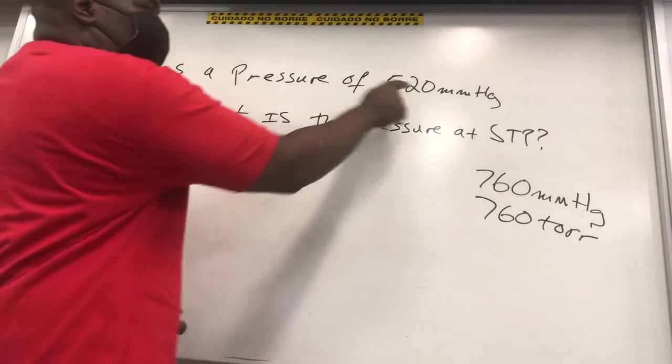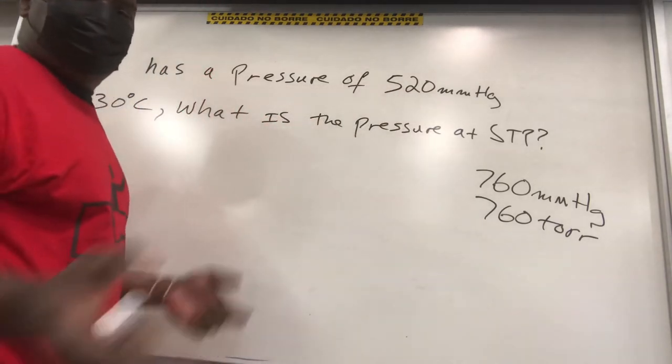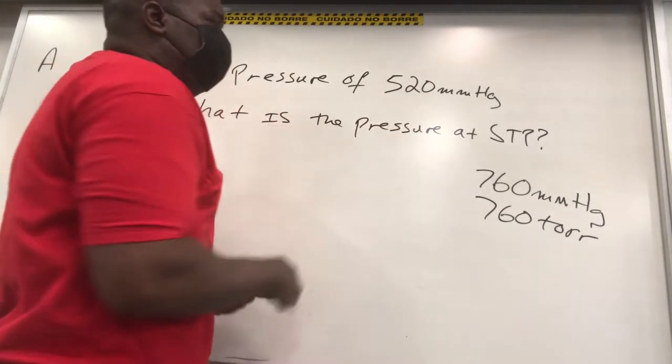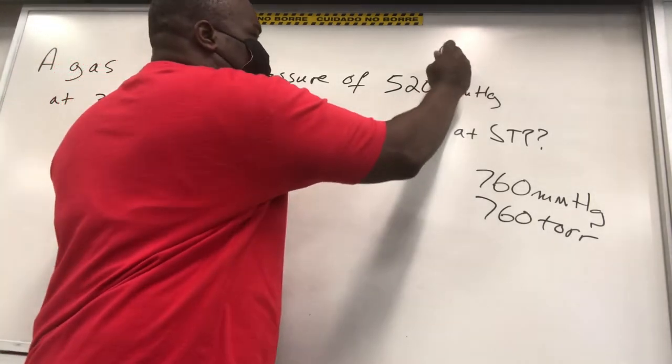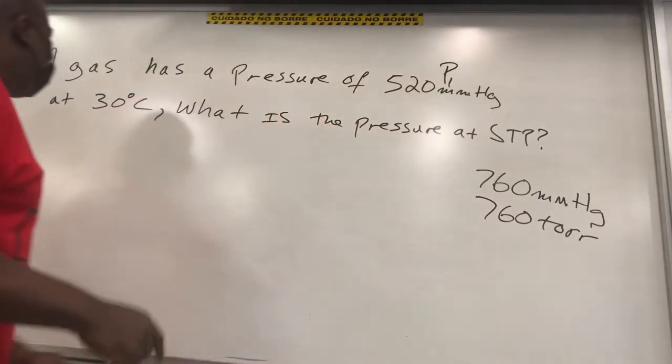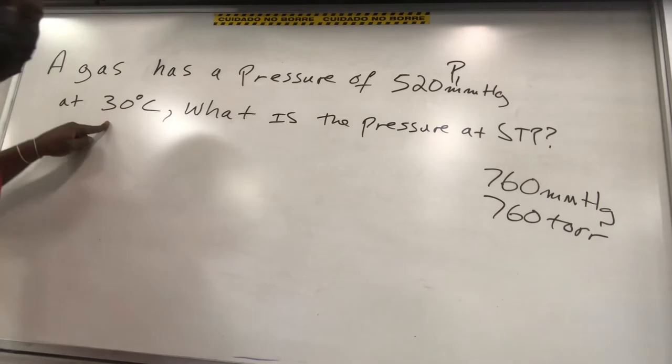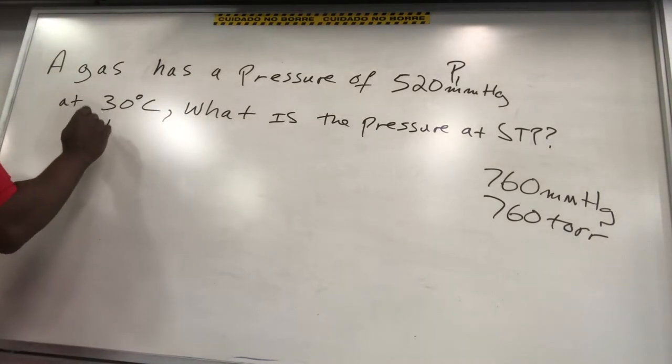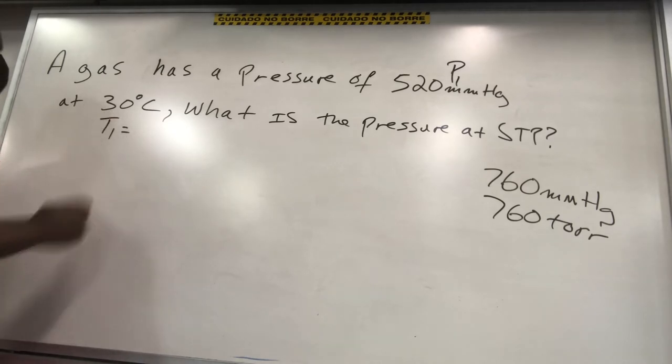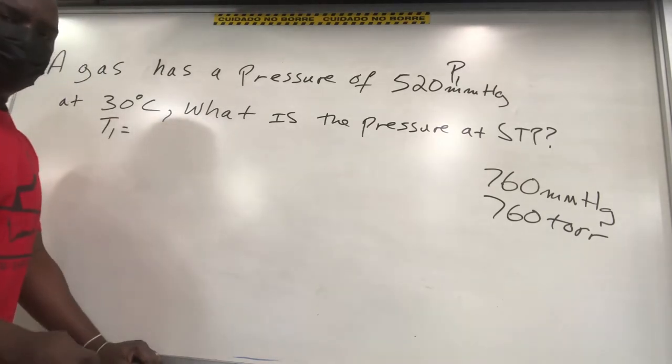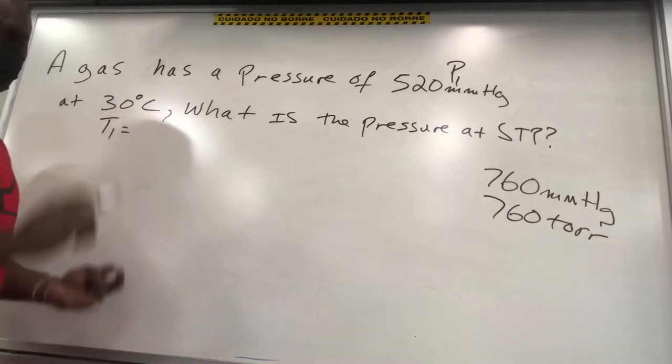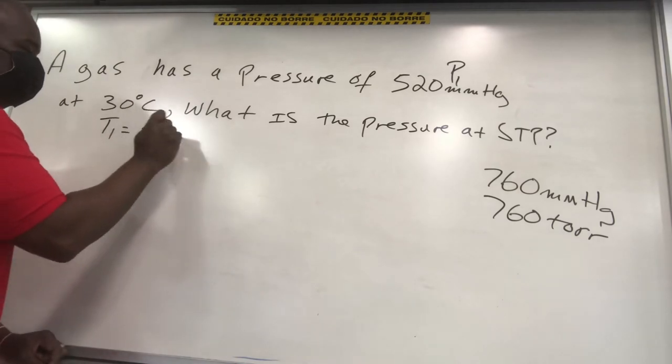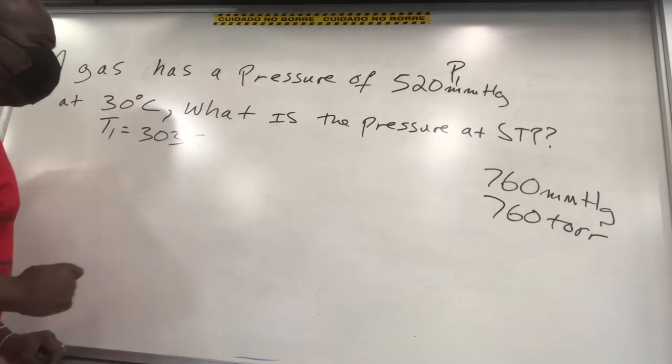So it has a pressure of 520 mmHg. What do you think that variable is going to be? Starting at this guy right here, this would be our P1, that's our initial pressure. It's at 30 degrees C. So that's going to be our T1. Remember, we don't use Celsius. We're going to convert it to Kelvin. So 273 plus 30, if I'm not mistaken, that's going to be 303 Kelvin.